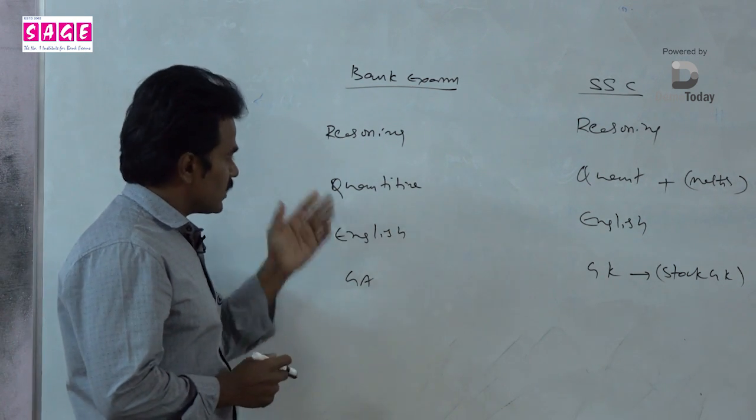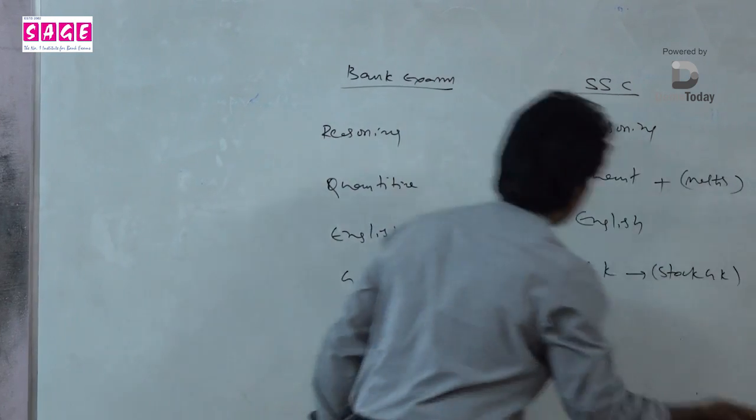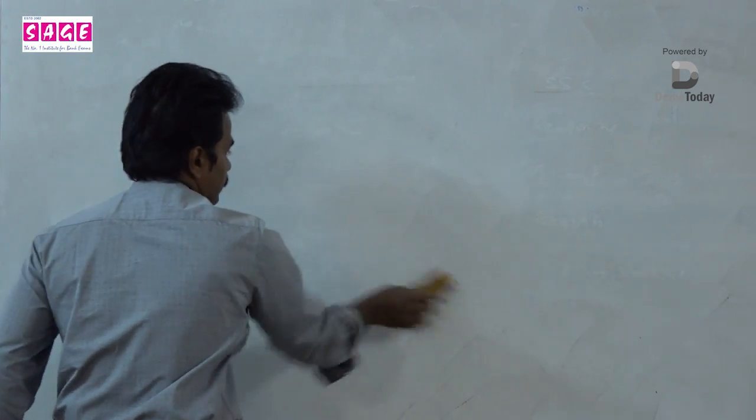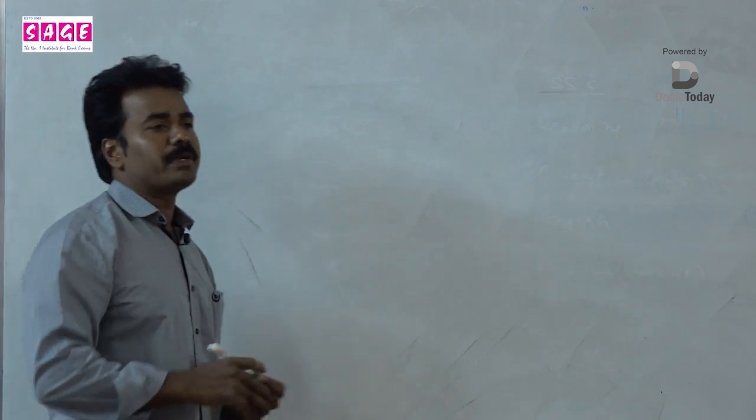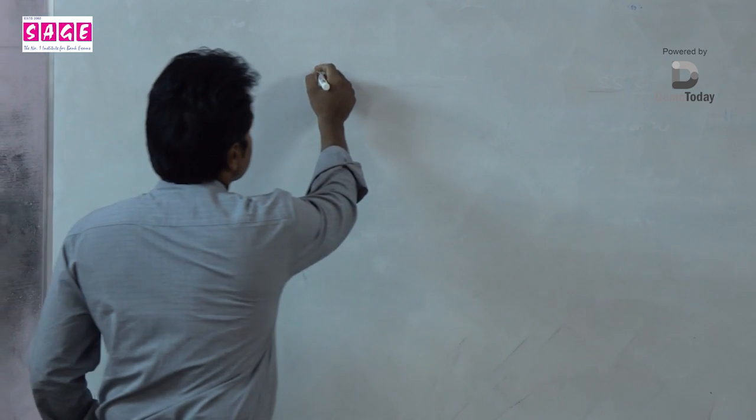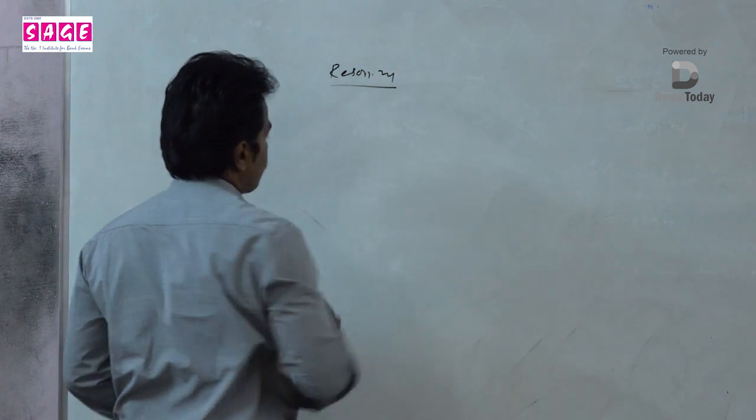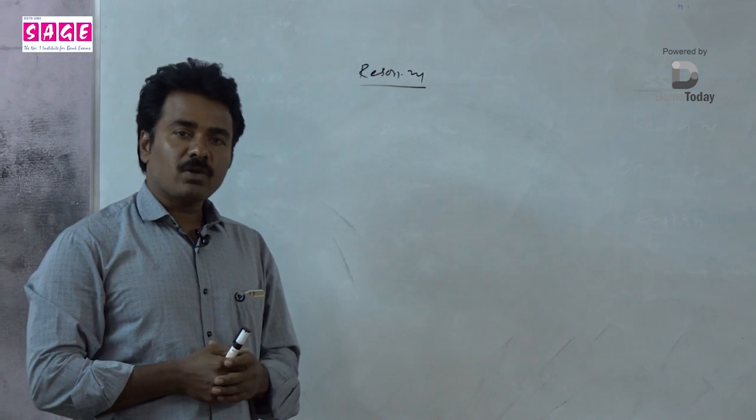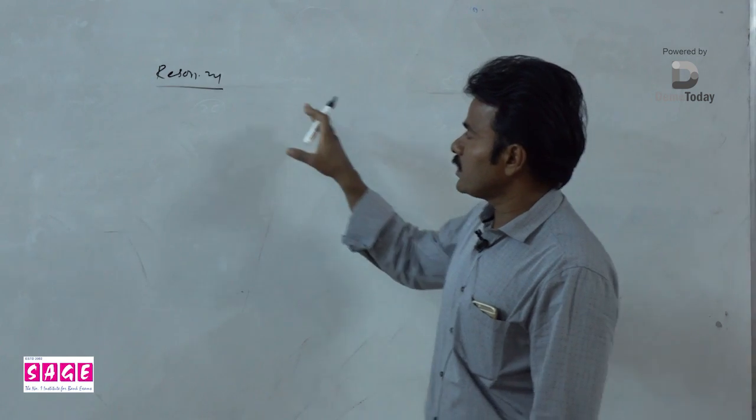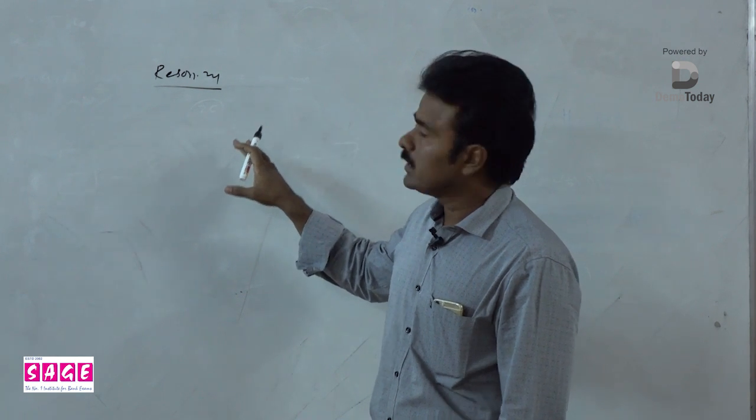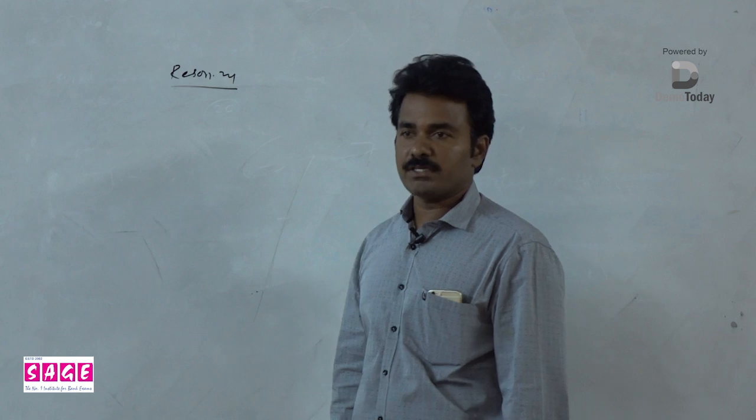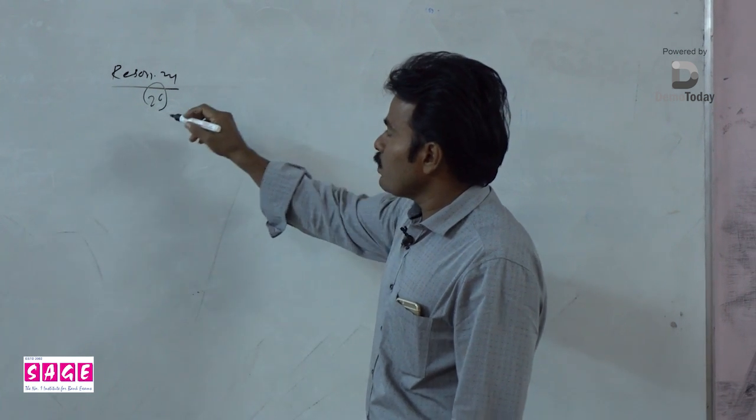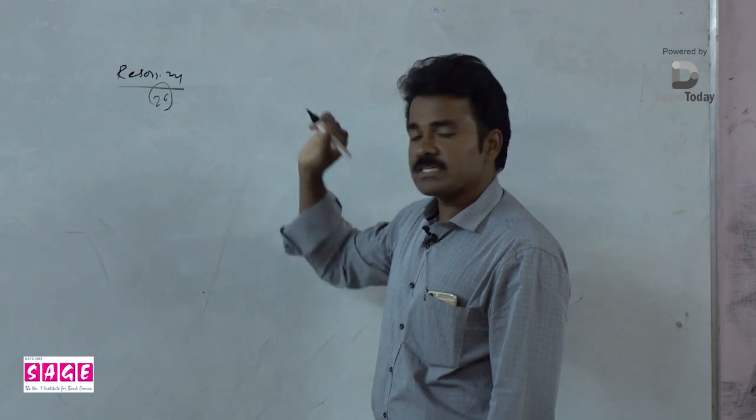Now let us see the subject-wise discussion. To succeed in the Staff Selection Commission or bank examinations, we need to solve questions very quickly because it is objective type examination. We need some techniques to crack the exam. Let us see one of the important subjects: reasoning. Reasoning is not covered in school level, inter level, or degree level, but the remaining sections we have come across in school and college days. Reasoning is a very important section in all competitive exams nowadays—a very interesting and intelligent topic. The reasoning subject starts from the 26 English alphabets, so we should know the position of all the alphabets.